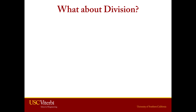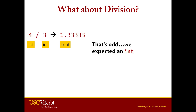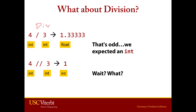Now what about division? Here's where we have to start paying attention a little more, because things get a little different. If we do an int divided by an int, this is division, and you get a float. That's a bit odd — we would expect an int. But then there's another operator that looks like division but behaves differently, and if we do it that way, we actually do get an int. So what's going on here?